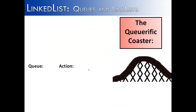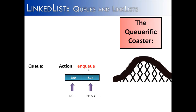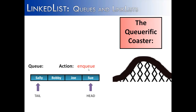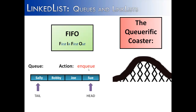Before we talk about the special relationship between queues and linked lists, let's talk about how a queue works. First, an item is added to the queue, and then all subsequent items are added directly behind the last one that was added. So Joe goes behind Sue, Bobby goes behind Joe, and finally Sally goes behind Bobby. Now we're ready to remove the items from the queue. Instead of accessing the end to add an item, we access the front to remove an item, and this is going to happen in a FIFO manner, or first in, first out.